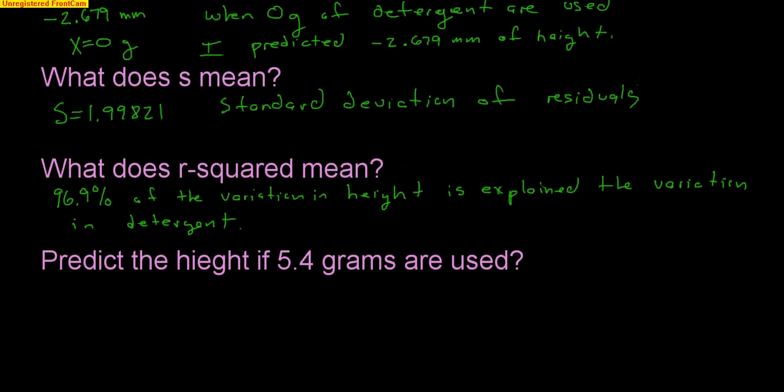Okay, one more thing I could ask you to do is to predict the height if 5.4 grams of detergent are used. So once again, I'm just going to use my equation here, which is y-hat equals negative 2.679 plus 9.5. And then instead of x, I'm going to plug in the grams. That's the 5.4. So let's see here. I'm going to use my calculator. Negative 2.679 plus 9.5 times 5.4 gives me 48.621 millimeters of soap suds.